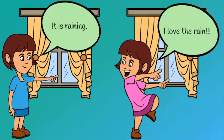Subjective and objective are opposites. Anything objective sticks to the facts. We can determine it's a rainy day because we see that it's raining. There's no way to misinterpret that information. It's raining, and that's a fact.